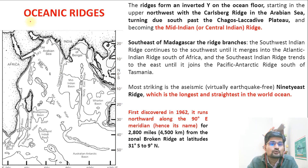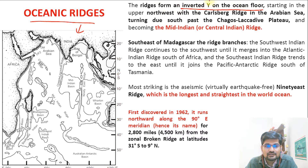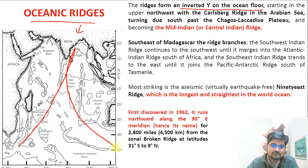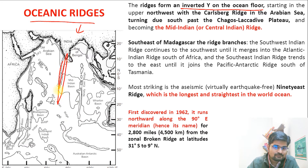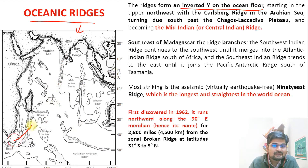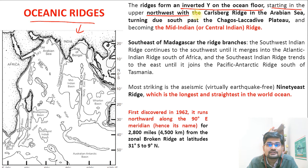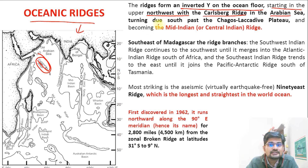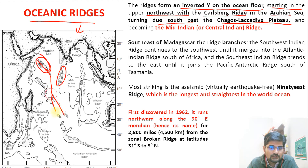The ridges form an inverted Y shape on the ocean floor. Starting in the upper northwest with the Carlsberg Ridge — located in the Arabian Sea — turning due south past the Chagos-Lakshadweep Plateau. This becomes the Mid-Indian Ridge. Southeast of Madagascar, the ridge branches: the Southwest Indian Ridge continues southwest until it merges with the Atlantic-Indian Ridge, and the Southeast Indian Ridge extends east until it joins the Pacific-Antarctic Ridge.